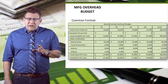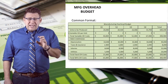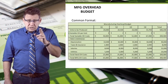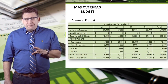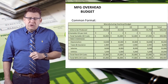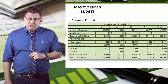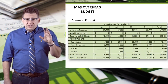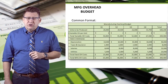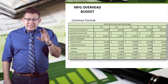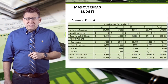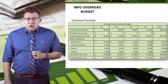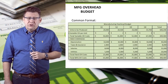The Manufacturing Overhead budget takes the units produced, which comes from the production budget, and multiplies that by the variable Manufacturing Overhead per unit. This gives us total variable Manufacturing Overhead costs. We next add the fixed Manufacturing Overhead cost to that to arrive at total Manufacturing Overhead costs.